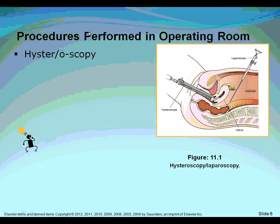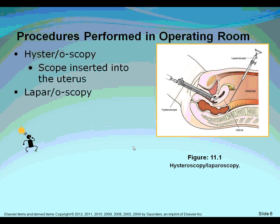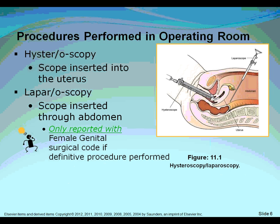These next procedures are performed in the operating room only. Hysteroscopy is a scope inserted into the uterus — 'hystereo' basically means uterus. Laparoscopy is a scope inserted through the abdomen. A lot of times they can be used together because the provider may want to view the backside or inside of the uterus at the same time.